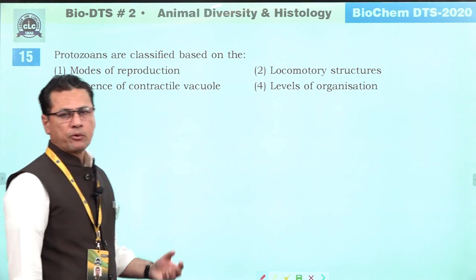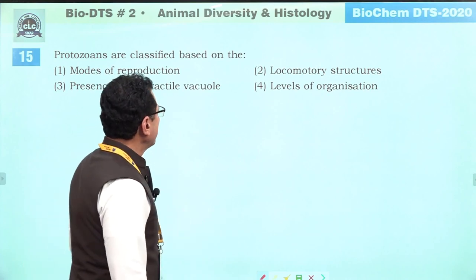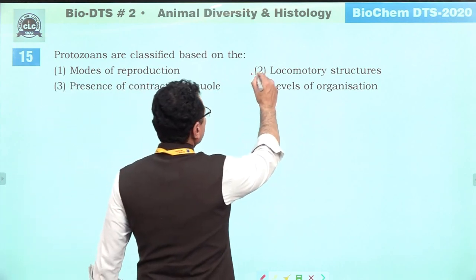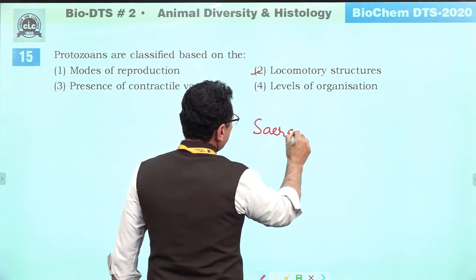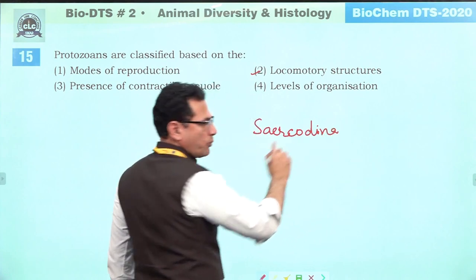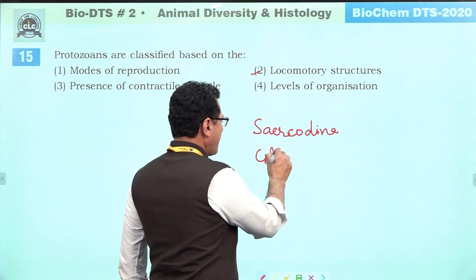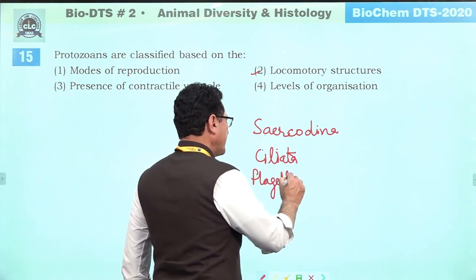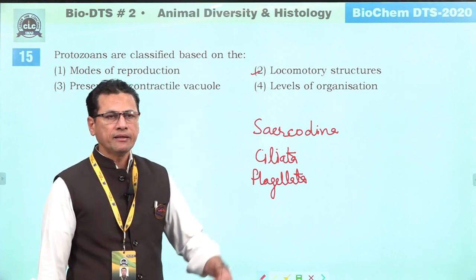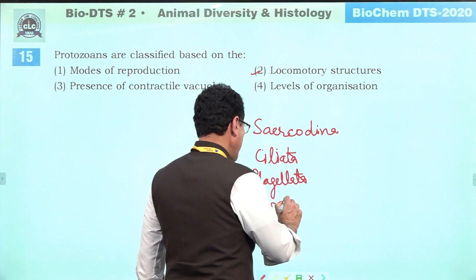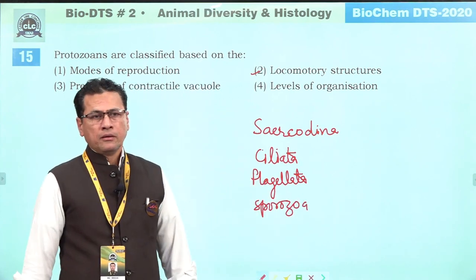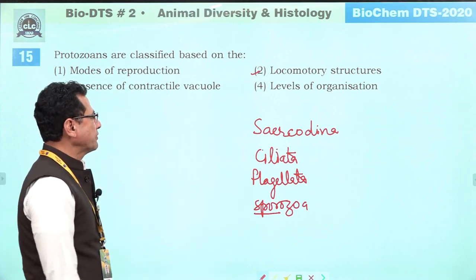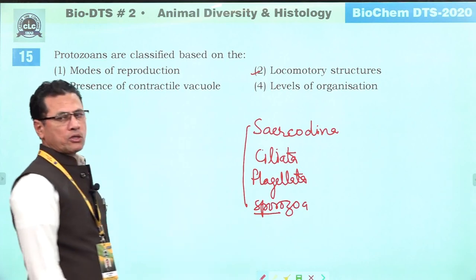Protozoans are classified based on locomotory structures. The criteria for classifying protozoans is their locomotory organs. Sarcodina use pseudopodia for locomotion. Ciliata use cilia for locomotion. Sporozoa are all endoparasites — they have no locomotory organ. Parasitic flagellates are also parasites. So the basis of classification is locomotory structures.